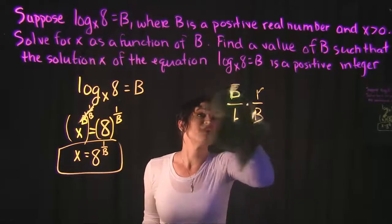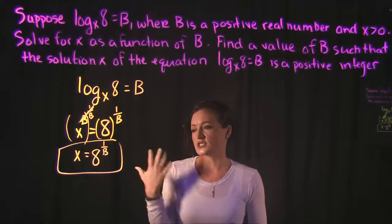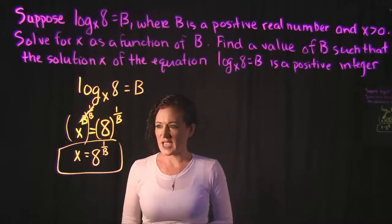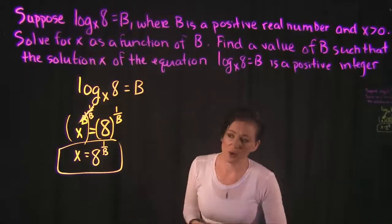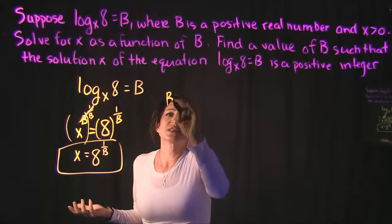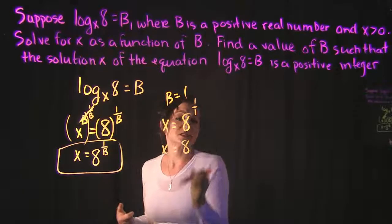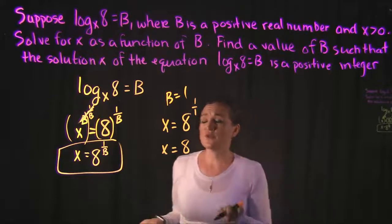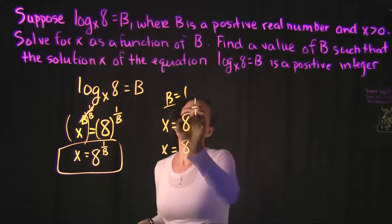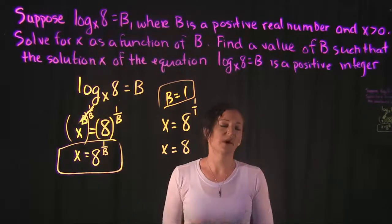They want us to find a value of b such that the solution is a positive integer. There are a lot of things we can plug in for b to make it an integer. The easiest is b equals 1. If b equals 1, then x equals 8 to the 1 over 1, which is simply x equals 8 — a positive integer. So our equation is x equals 8 to the 1 over b, and b equals 1 gives us a positive integer.